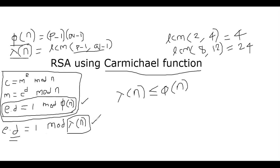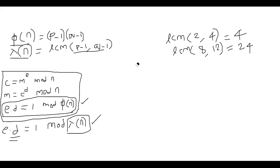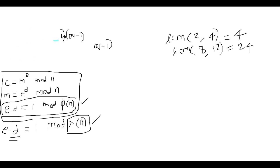Both approaches are correct, and I will now show why. We already proved that e · d ≡ 1 mod φ(n) helps us recover message m from ciphertext c. But how does e · d ≡ 1 mod λ(n) also help? Let's quickly do that proof — why λ(n) will allow recovery of m from ciphertext c.